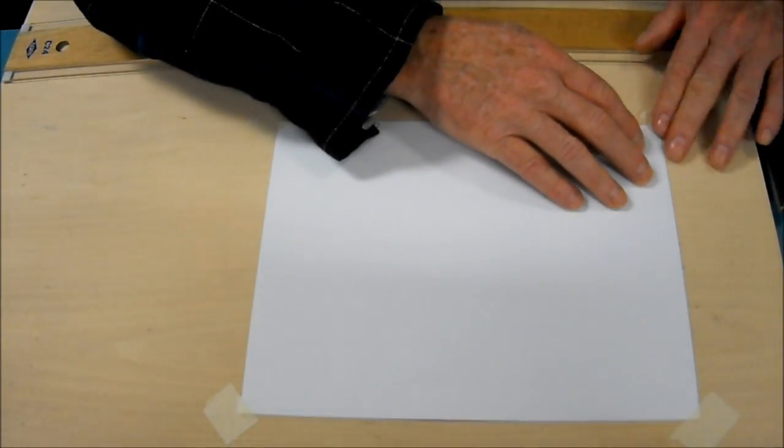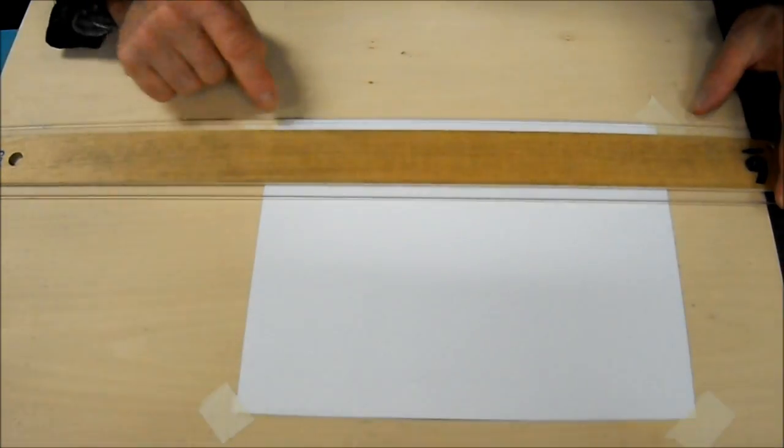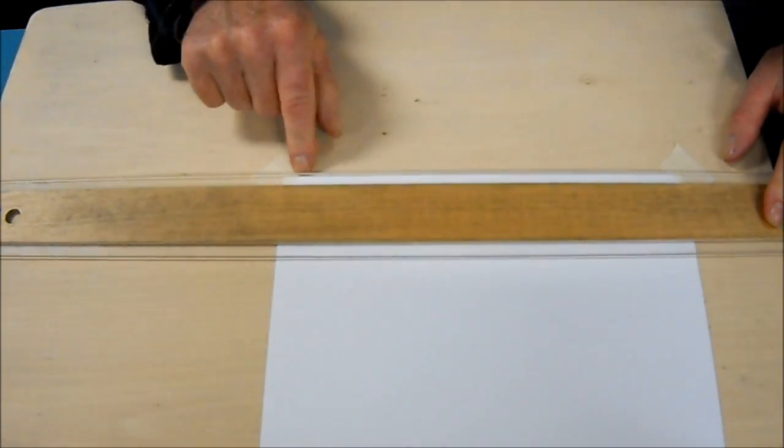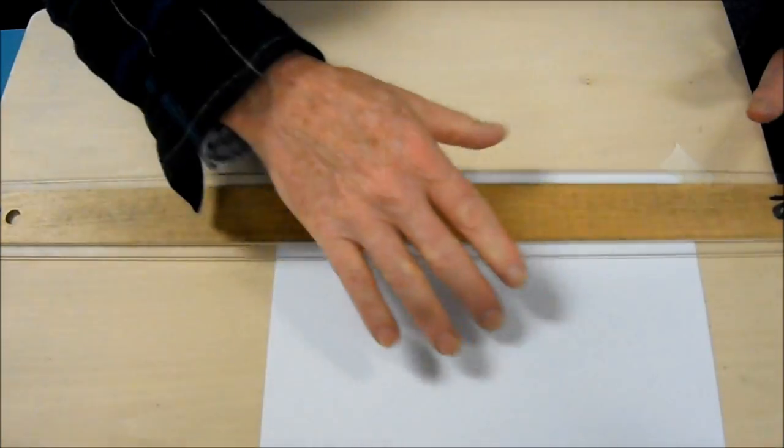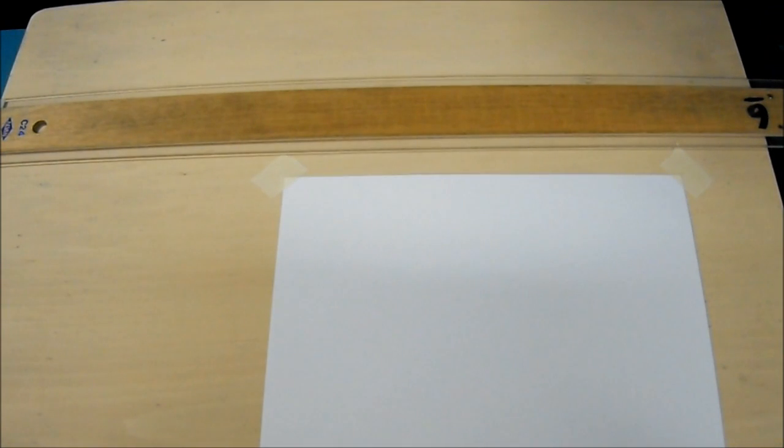Before you actually begin your drawing, put the T-square on here, slide this down, and make sure it's lined up straight. If it's not lined up straight, everything you draw is going to be incorrect.